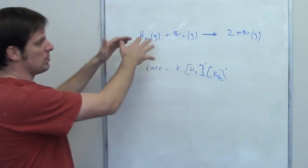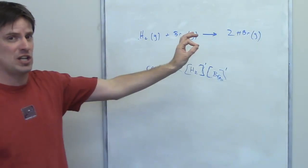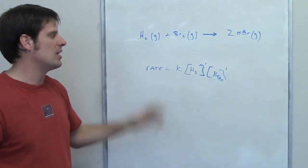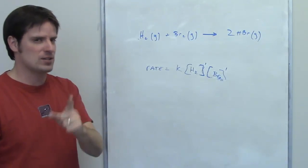Now if this process occurred by multiple steps, then we'd have to determine which of those steps was the slow step, and then we could derive the rate law directly from that step. So this is the correct answer to this question.